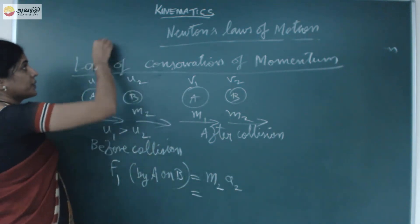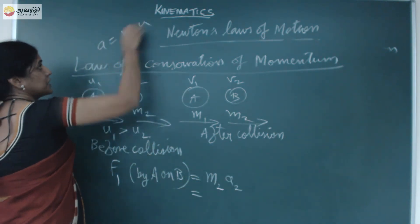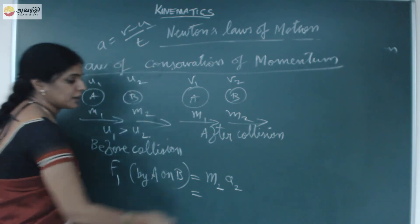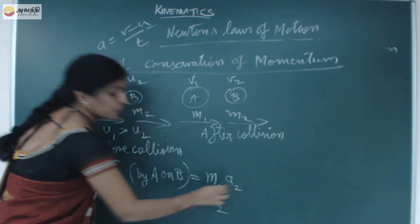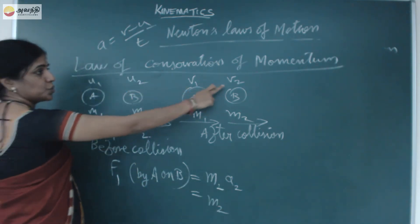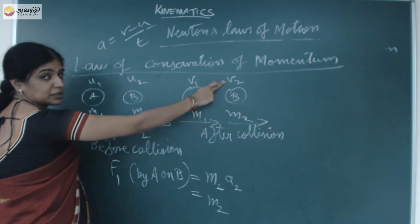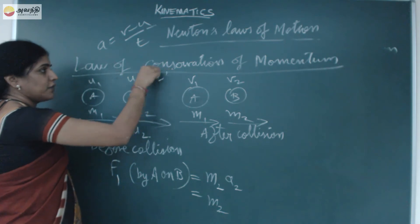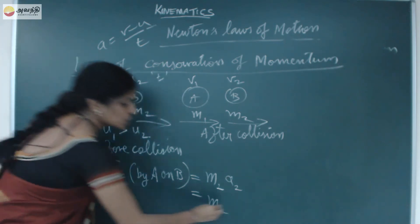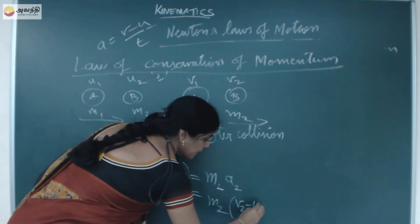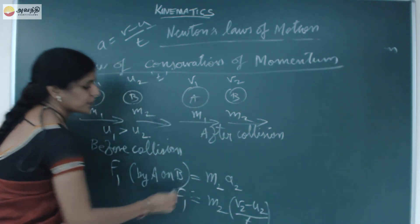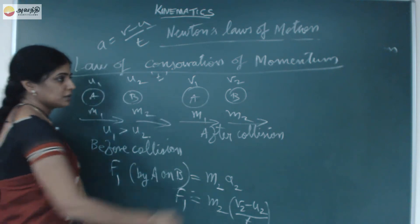Acceleration equals rate of change of velocity. Change in velocity by time taken. Final minus initial velocity by time taken. What is a2 here? v2. Object B's final velocity is v2, initial velocity is u2. Let T be the time taken for the object when they collide. So here v2 minus u2 by T. So F1 equals m2 into v2 minus u2 by T.